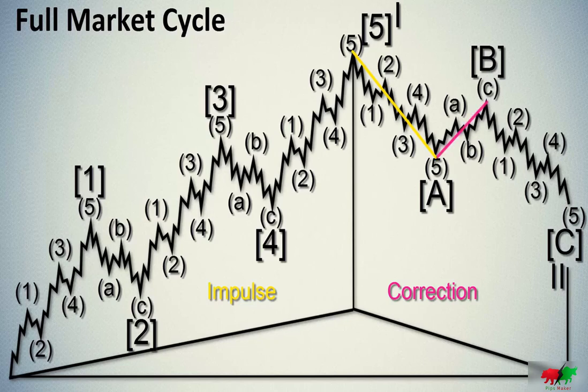The B wave has a corrective and three-wave structure. It is because the impulse waves not always go up and corrective waves not always go down. Their direction depends on the direction of the higher degree wave.